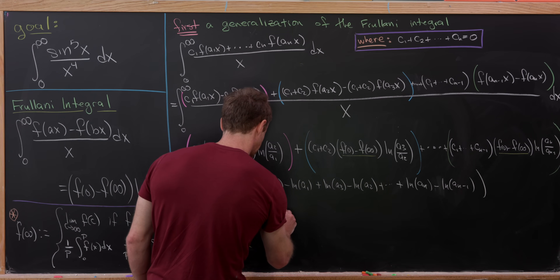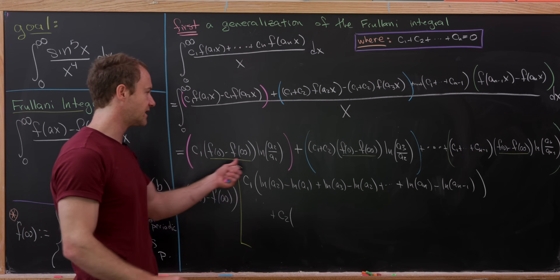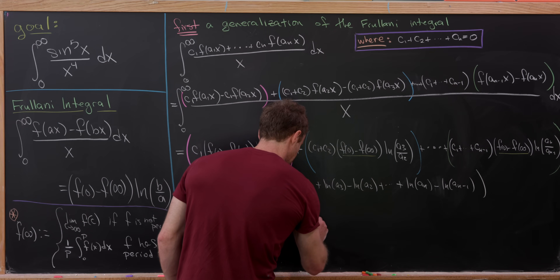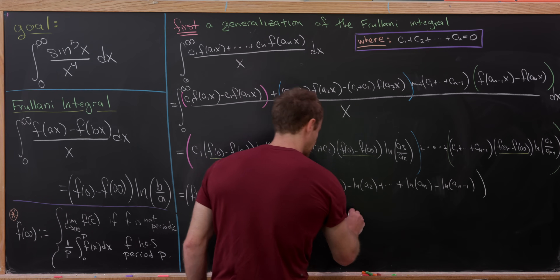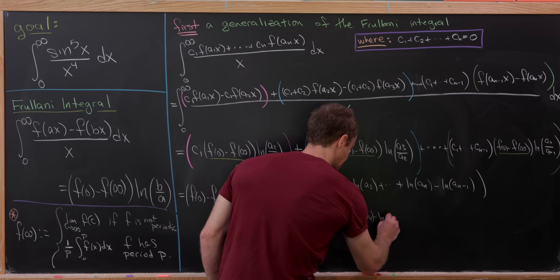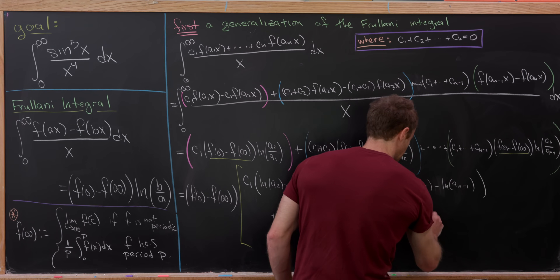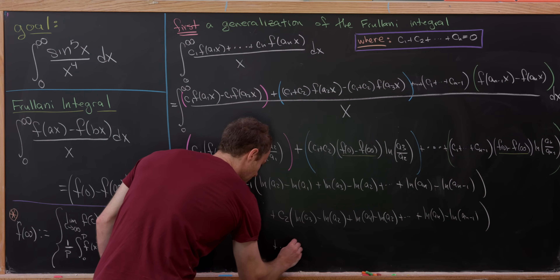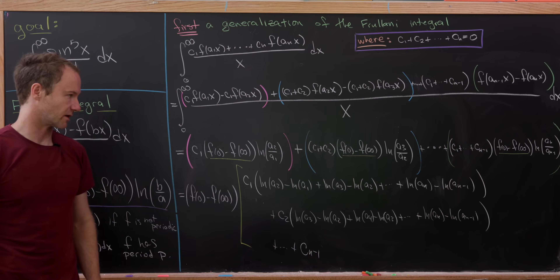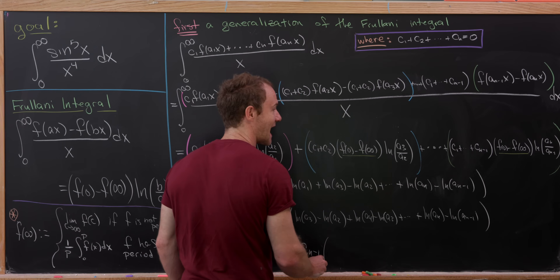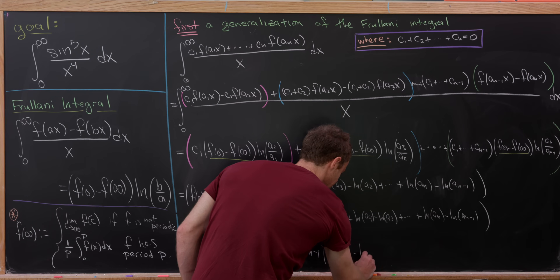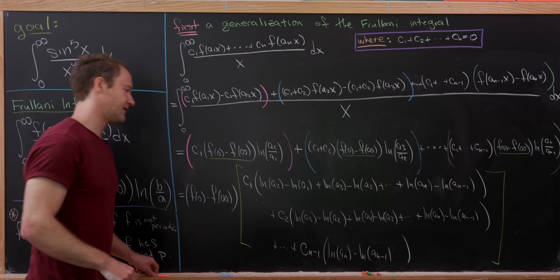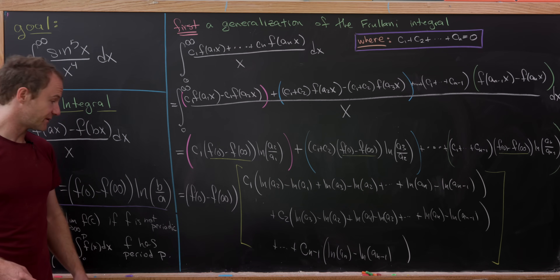For c₂, it captures everything from the blue parentheses onward: ln(a₃) − ln(a₂) + ln(a₄) − ln(a₃) all the way to ln(aₙ) − ln(a_{n−1}). This continues through c_{n−1}, which is simply attached to ln(aₙ) − ln(a_{n−1}). Notice that the natural logarithm terms have a lot of cancellation within each coefficient group.